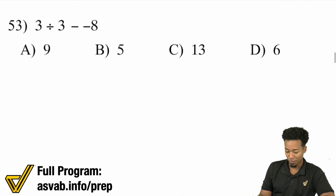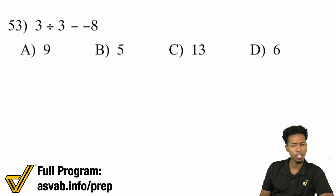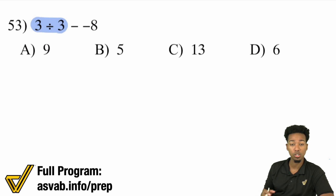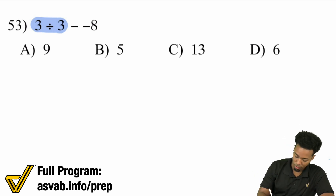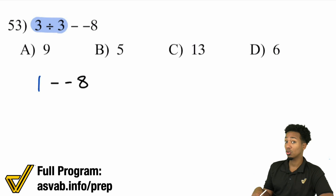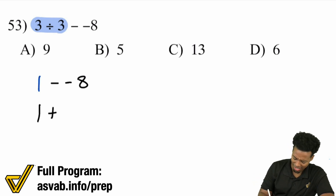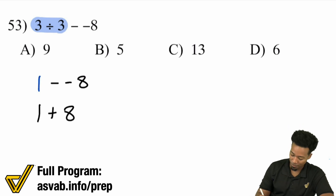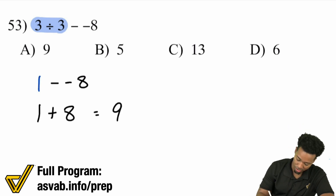Number 53: we have 3 divided by 3 minus negative 8. First, 3 divided by 3 comes first because division and multiplication come before subtraction — so 3 divided by 3 is 1. But then we have minus negative 8. When you're subtracting a negative, remember that's the same as adding the opposite — so subtracting a negative is the same thing as adding a positive. Minus negative is the same as addition — it's like saying reverse reverse, you're still facing forward. So 1 plus 8 equals 9.